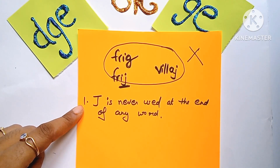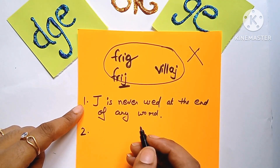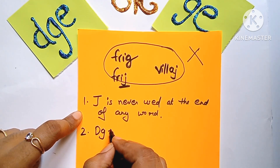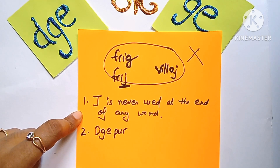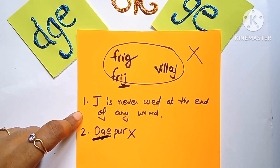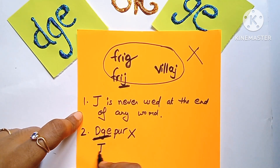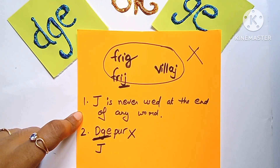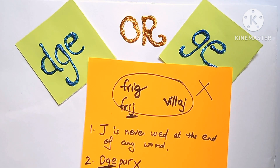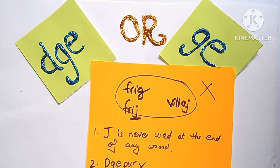The next question that comes to mind is: if we want to write Jaipur — Jaipur is a city you all know — should we write it with DGE or GE? No, because this combination is never used at the beginning of any word. किसी भी word की beginning पे ये combination use नहीं होता. J sound के लिए starting में हम J का ही use करते हैं. ये combinations — trigraph and digraph — word ending के लिए हैं, not at the beginning.